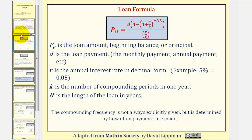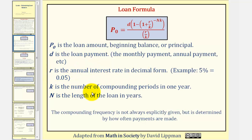Here is our loan formula, which we should already be familiar with. P sub zero is the loan amount. D is the loan payment per unit of time. R is the annual interest rate as a decimal. K is the number of compounds per year. And N is the length of the loan in years.